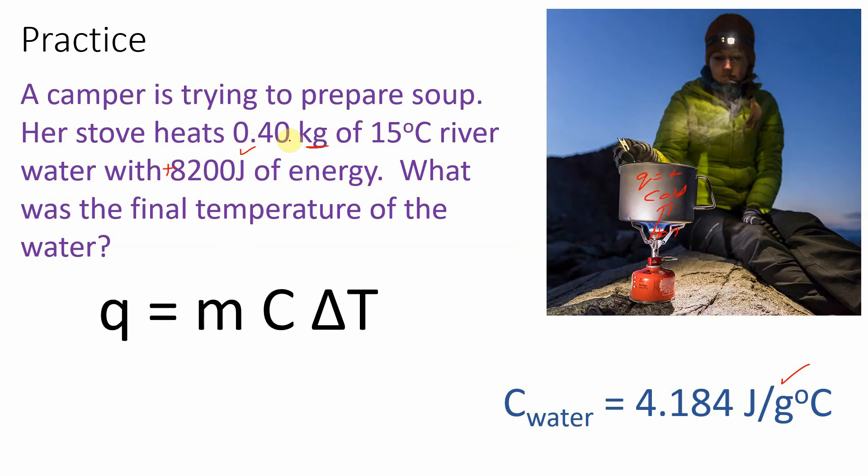This temperature is an initial temperature. And of course the last trick is they said what was the final temperature. So solving for delta T is not going to be enough. We're going to have to add it to our initial temperature to figure out the answer. So here's my work. I had positive there. I solved for delta T. I got 4.9 degrees Celsius.